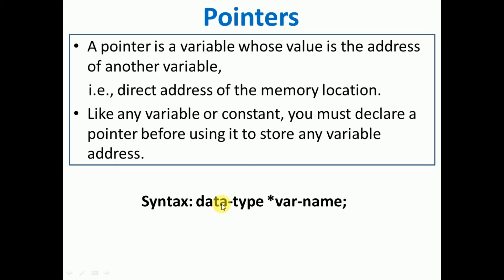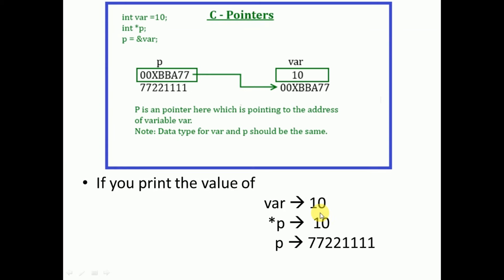Whenever you declare a simple variable, the syntax is data type followed by name of the variable. But whenever you are declaring a pointer variable, you have to precede the pointer variable name with a star to indicate that the variable declared is a pointer variable. This is the syntax for declaring a pointer variable. Now we will consider an example.